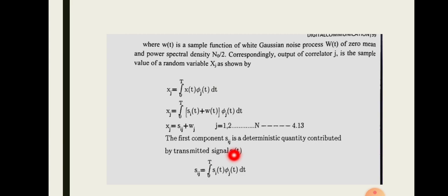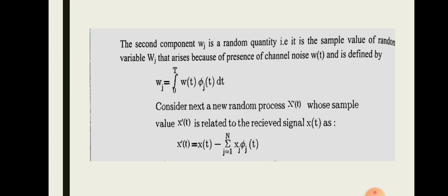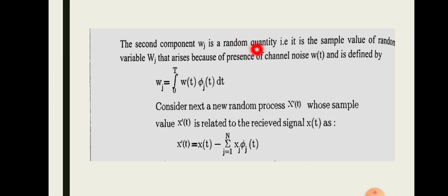The second component, wj, is a random quantity — it is the sample value of random variable Wj. This arises because of the presence of channel noise w(t), and is defined by wj = integral from 0 to T of w(t) · φj(t) dt.